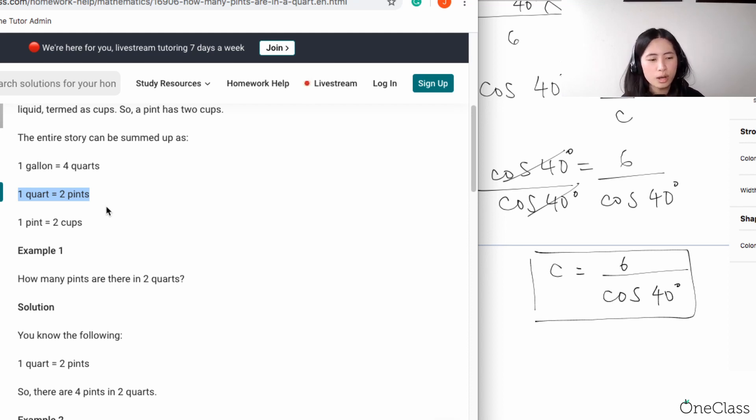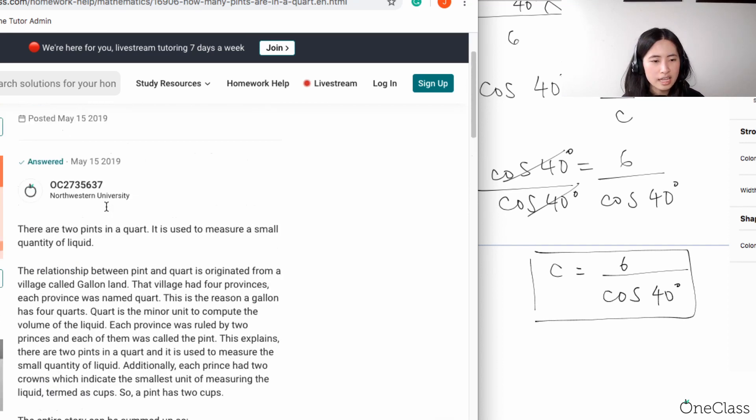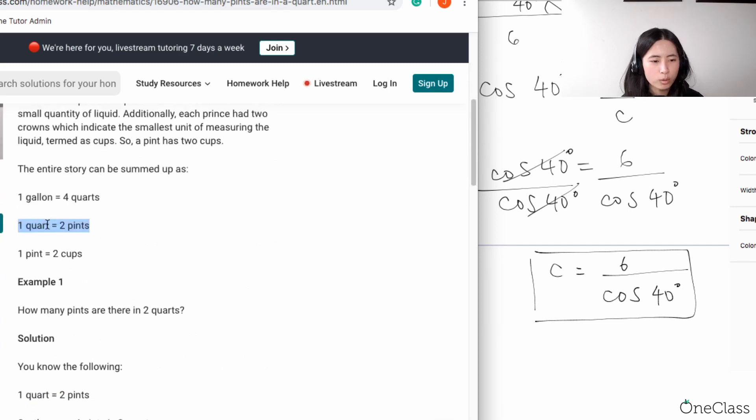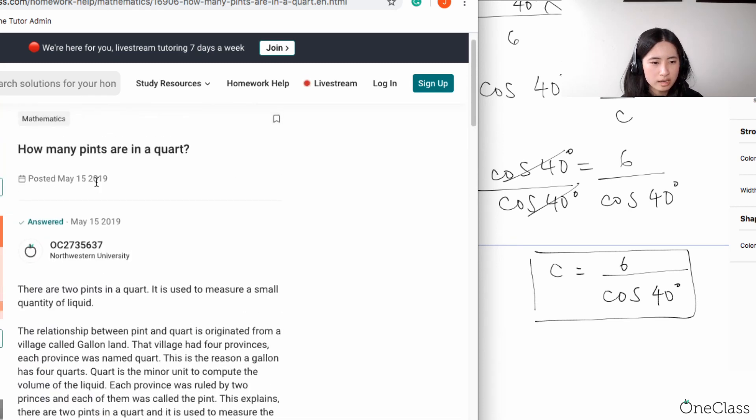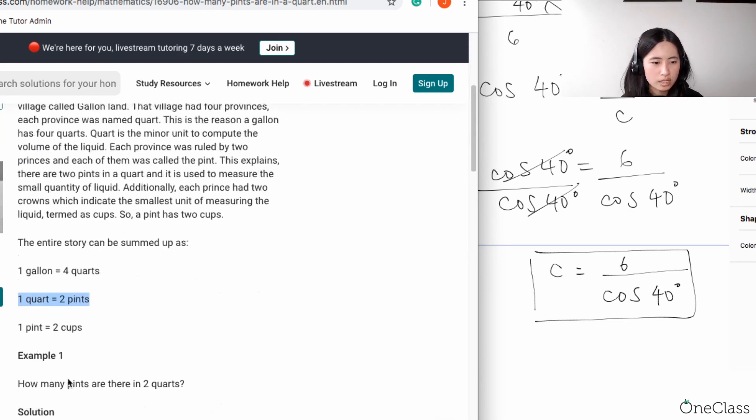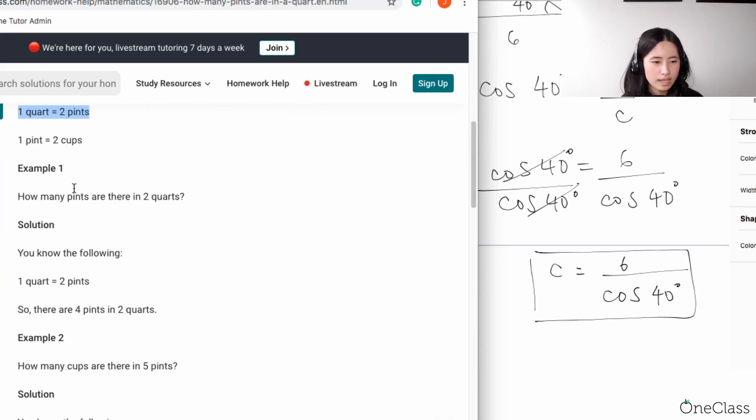Because they're saying that you have one quart and that's two pints, that's just going to be two. And then they're trying to give you an example which you can apply.